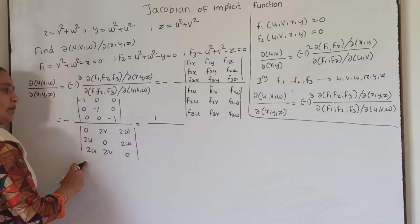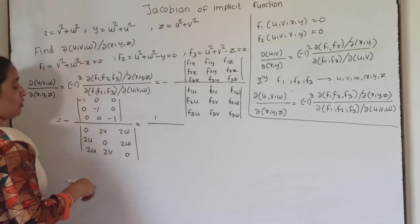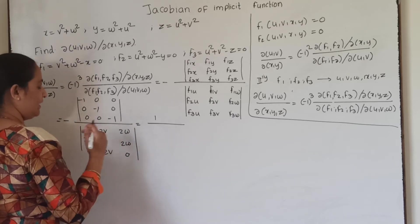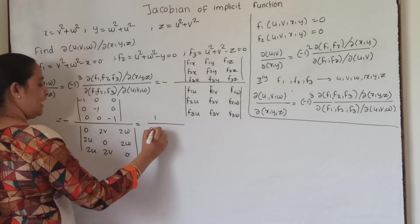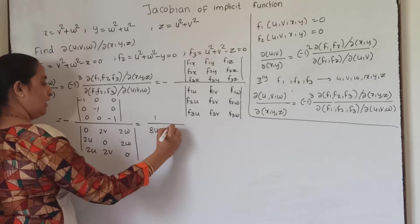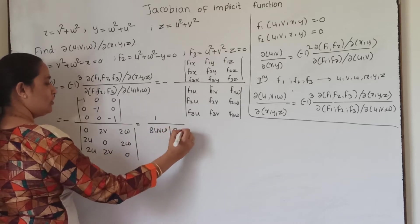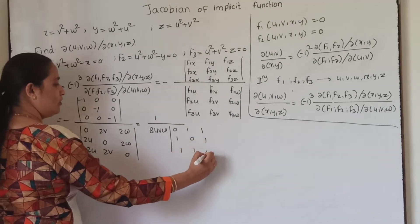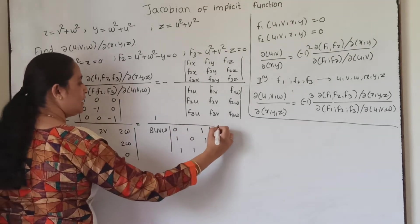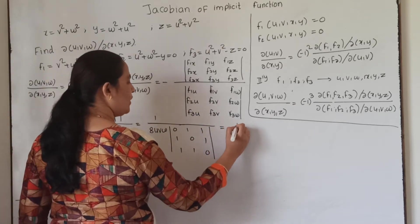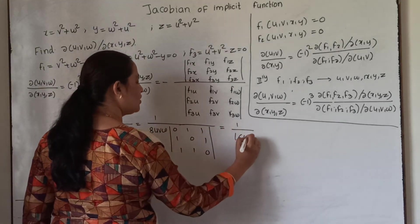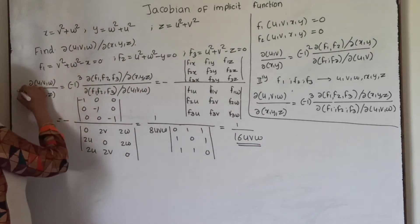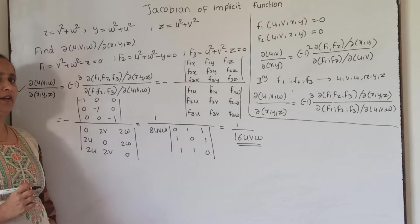Taking 2u common from the first column, 2v from the second column, and 2w from the third column gives 8uvw times the determinant of the remaining matrix with entries 0, 1, 1; 1, 0, 1; 1, 1, 0. Expanding this determinant gives 2, so the denominator is 8uvw × 2 = 16uvw. Therefore the Jacobian of uvw with respect to xyz equals 1/(16uvw).